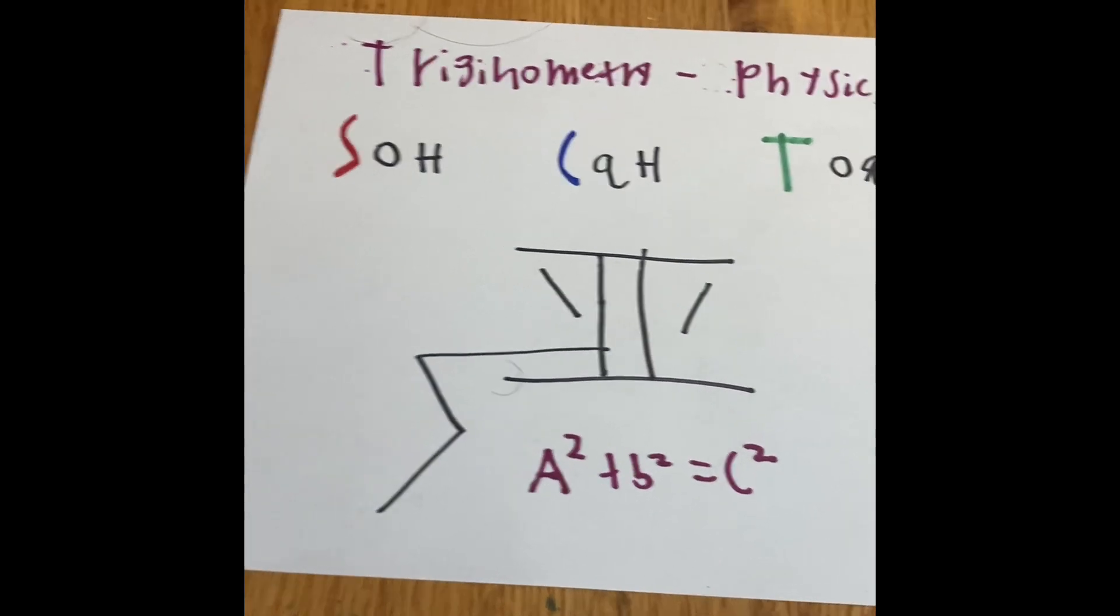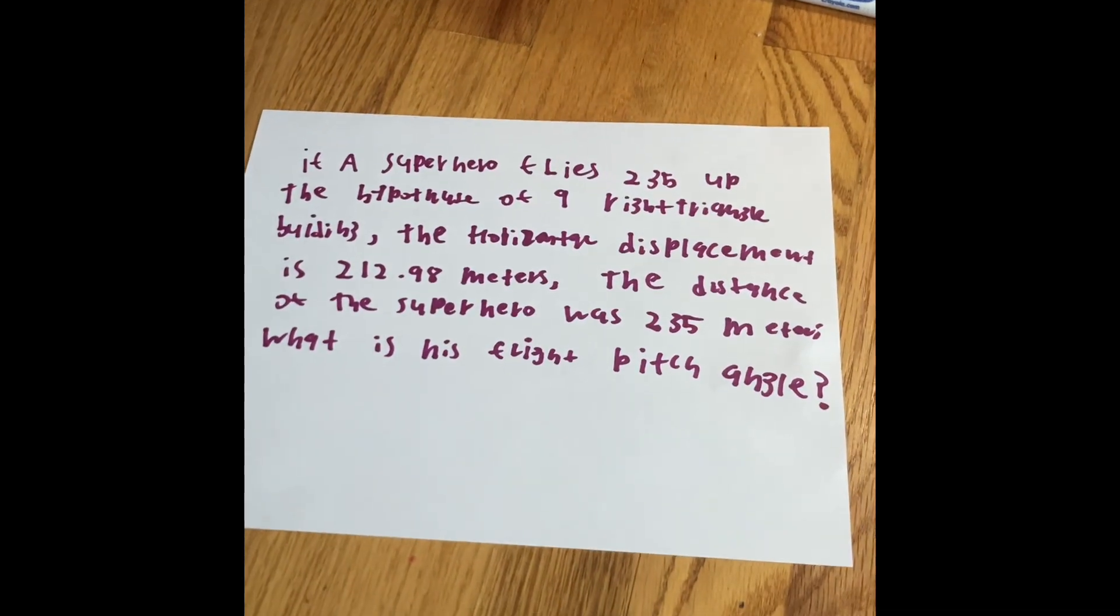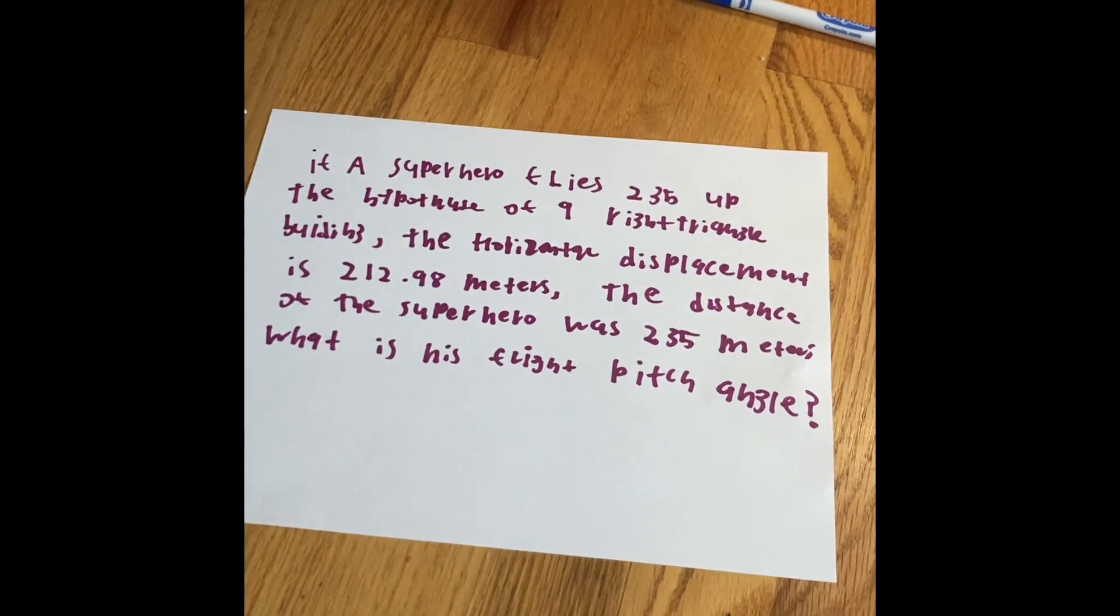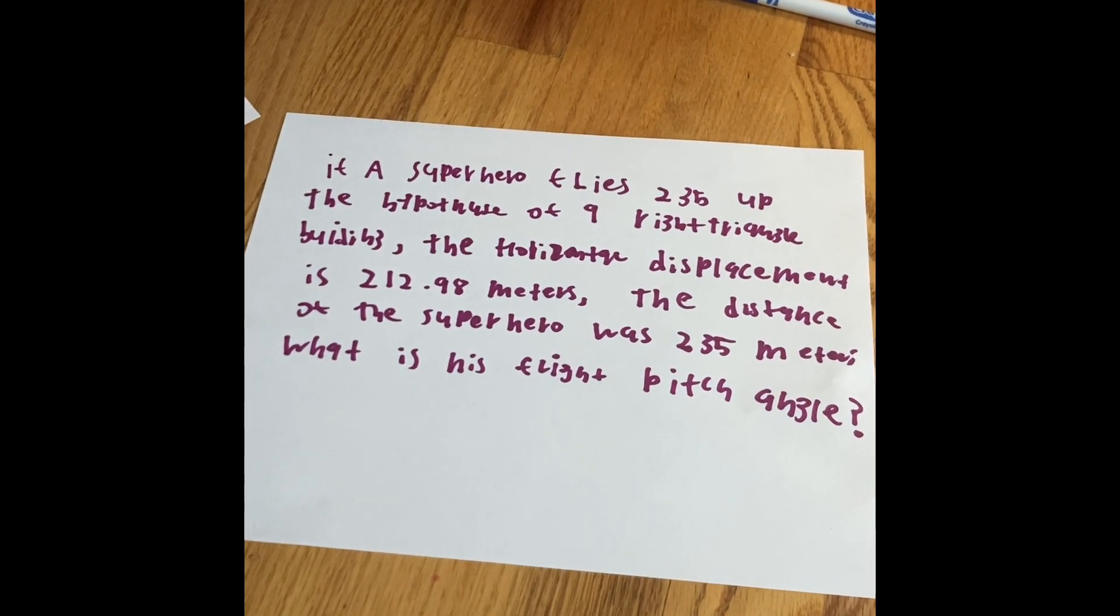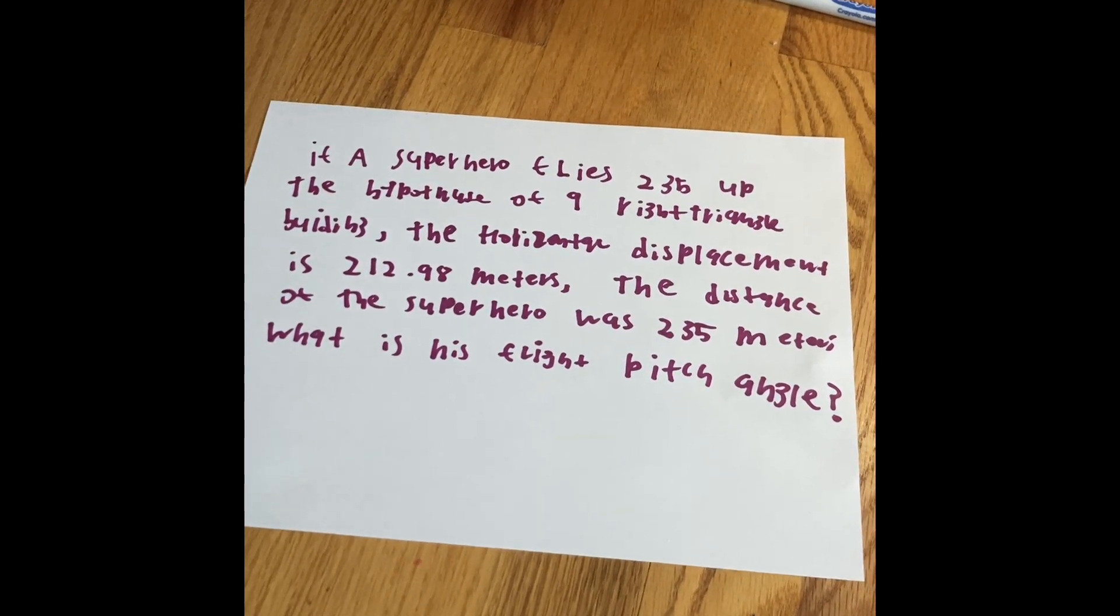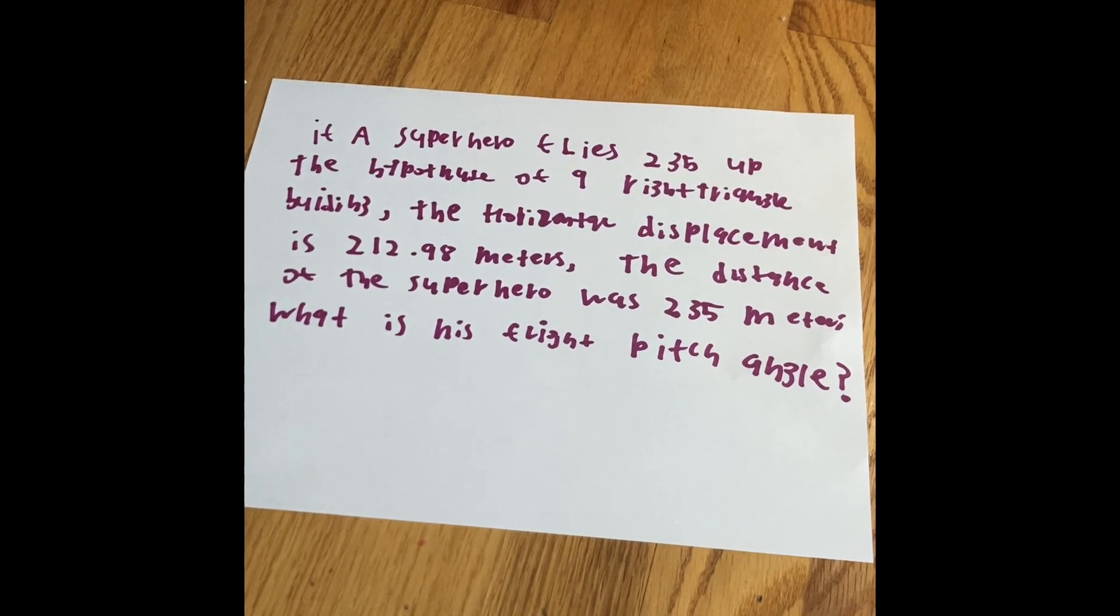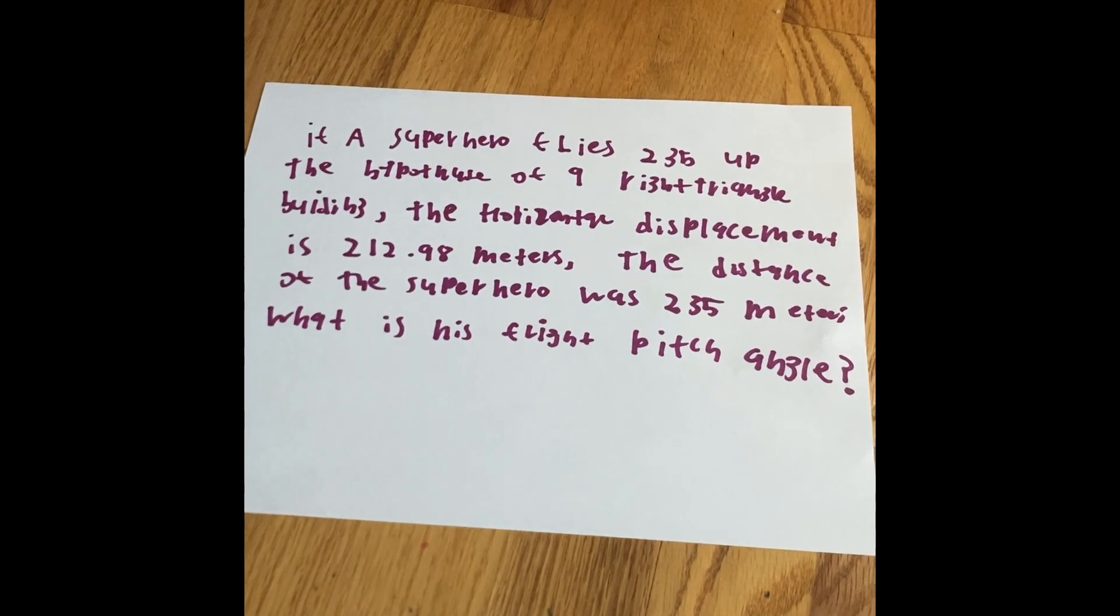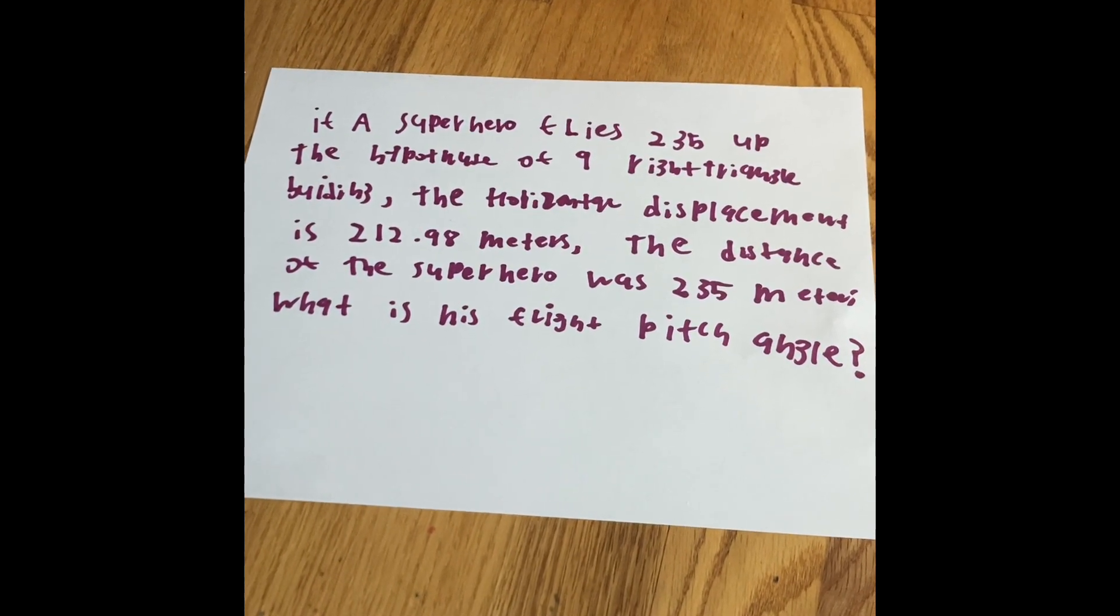So what we're going to do is solve this word problem. If a superhero flies 235 meters up the hypotenuse of a right triangle building, the horizontal displacement is 212.98 meters. The distance of the superhero traveled 235 meters above the hypotenuse. What was the pitch angle? So he has to somehow fly in a certain amount of degrees. That's what we're trying to do.